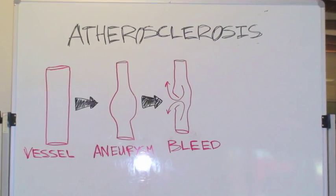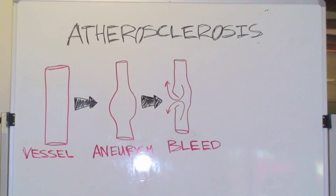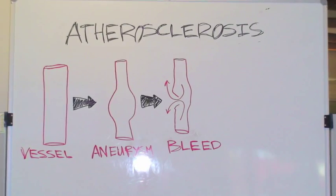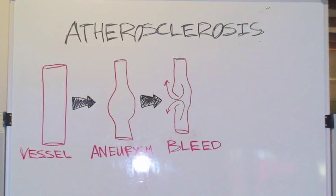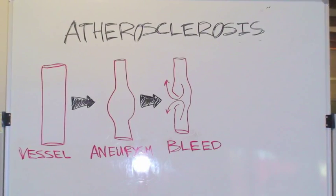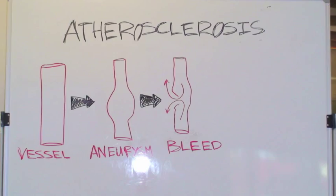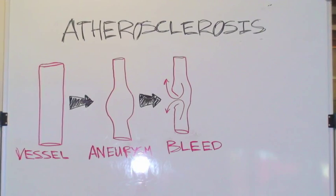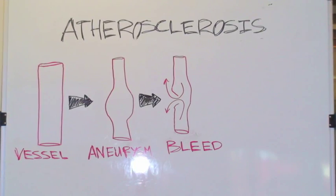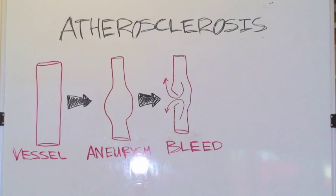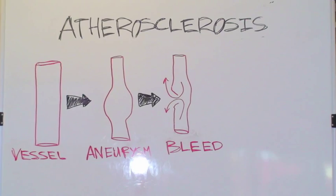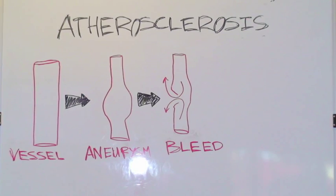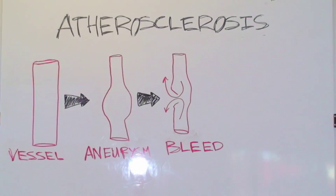The buildup of plaque is responsible for three main complications in atherosclerosis: aneurysm, ischemia, and embolism. As the plaque weakens the vessel wall, it becomes more prone to aneurysm, which may lead to internal hemorrhage if the aneurysm ruptures.